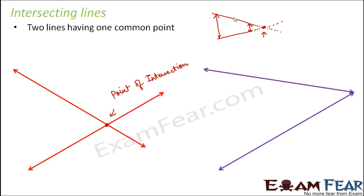Let us look at this example. This is also an example of intersecting lines where the two lines have a common point. So this is the point of intersection and these two are the intersecting lines.